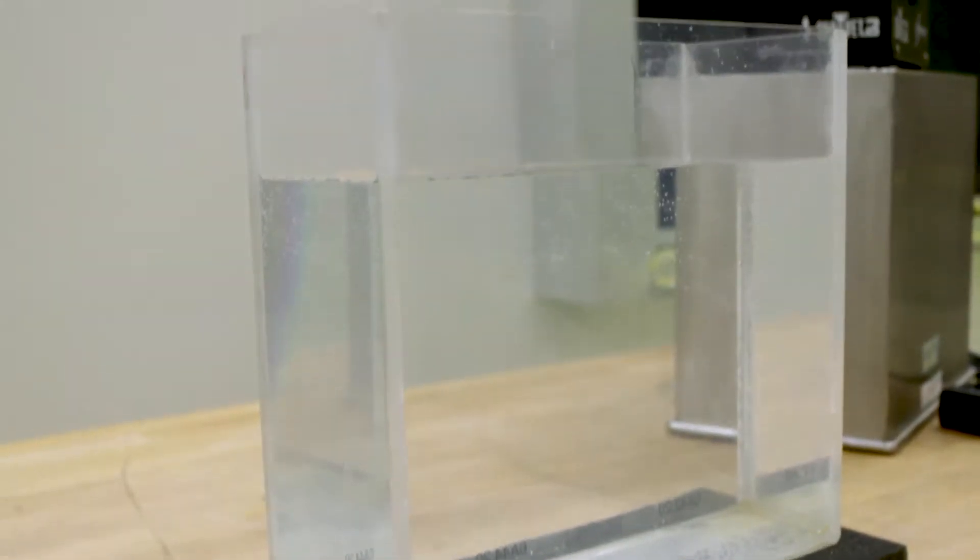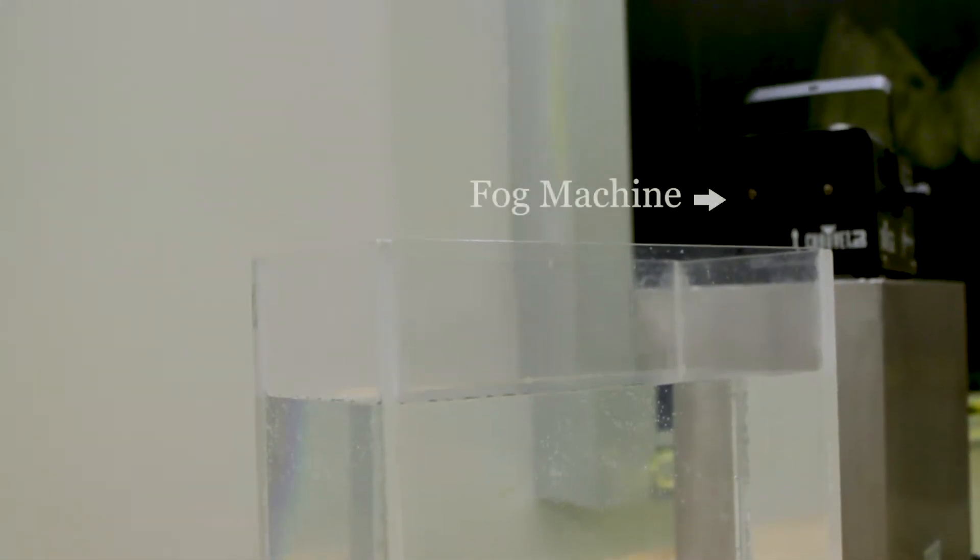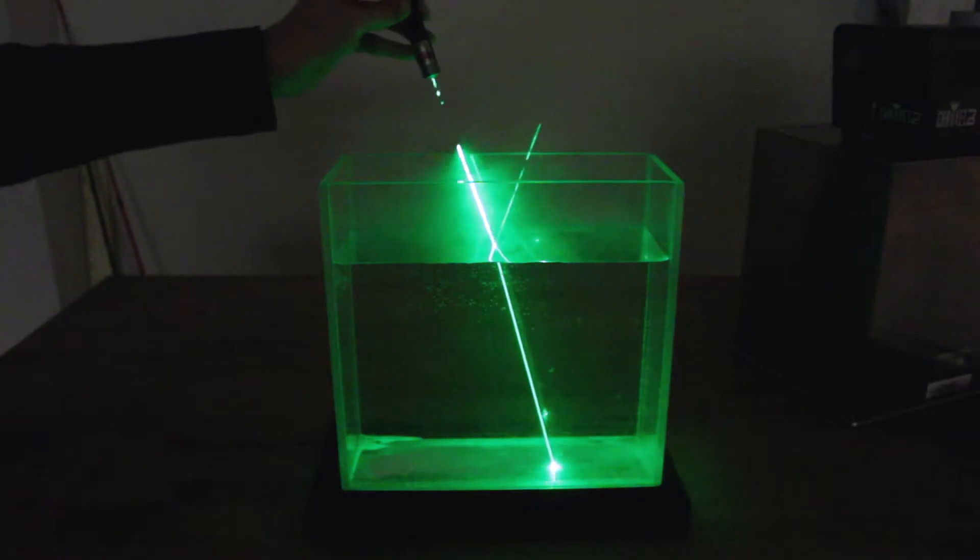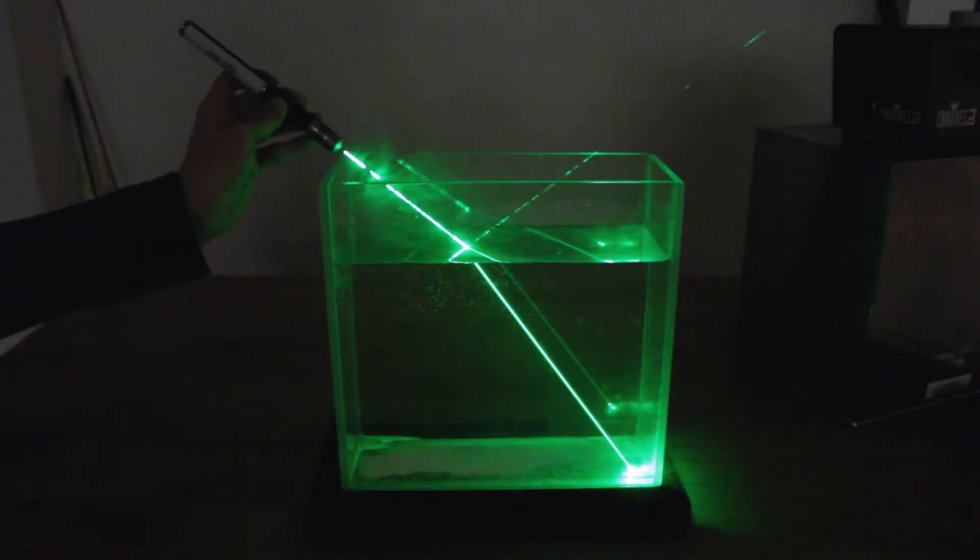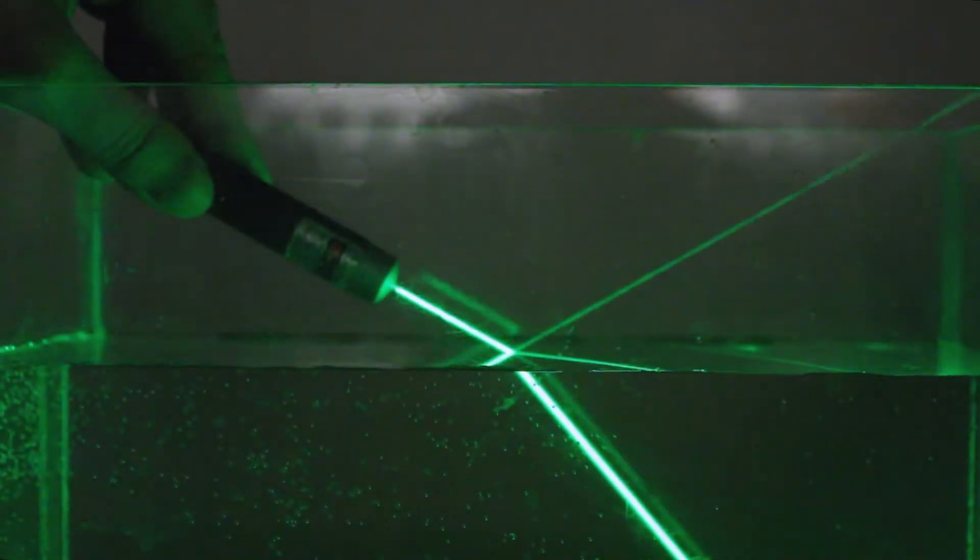Light bends as it travels from air into water. This occurs because light travels more slowly in water than in air. So part of the light is still in air and traveling faster when part of the light is in water traveling more slowly, which is the source of the bending.